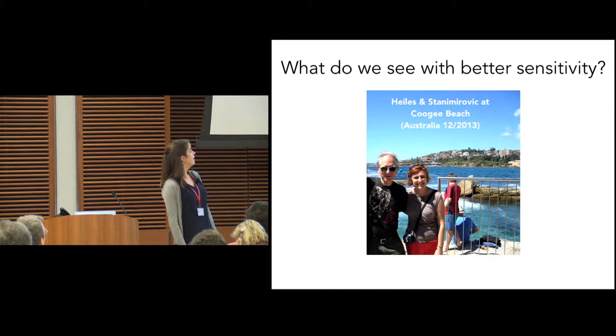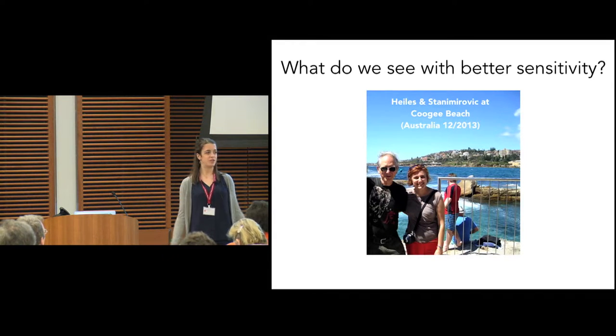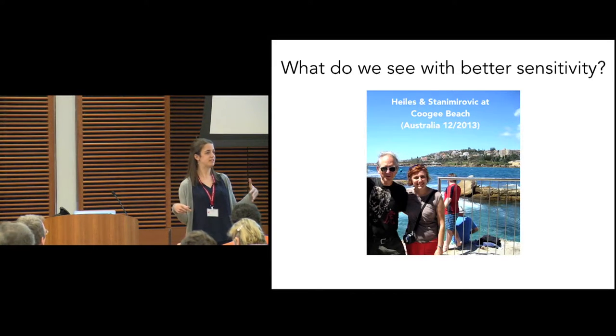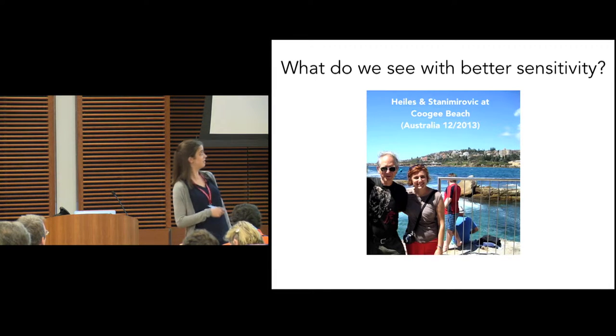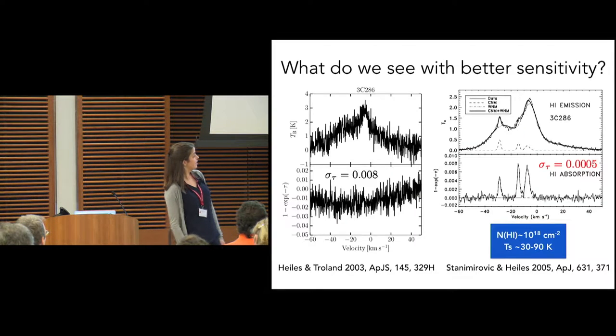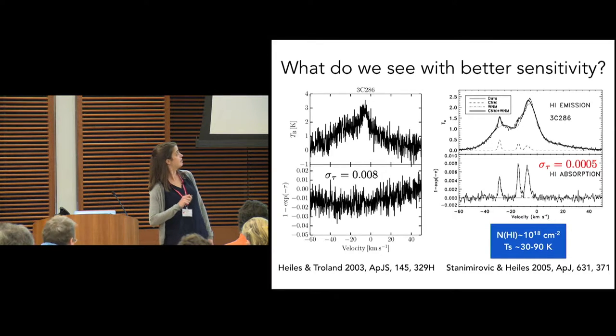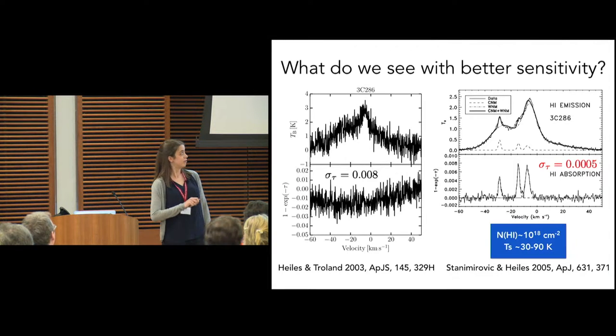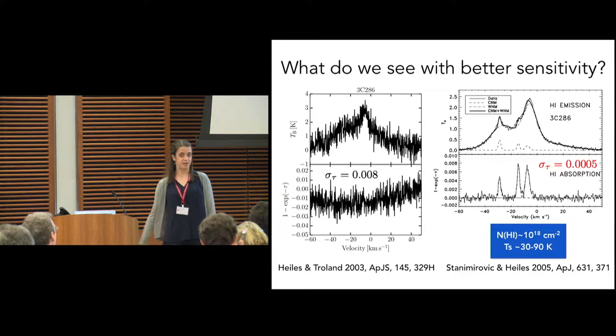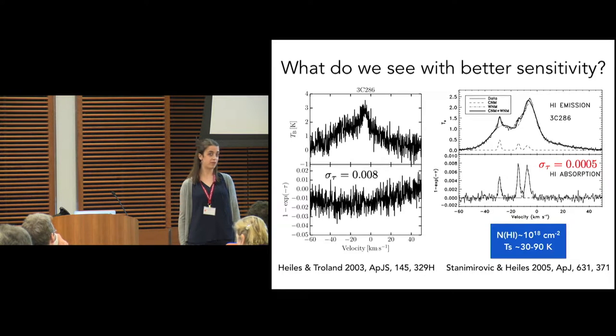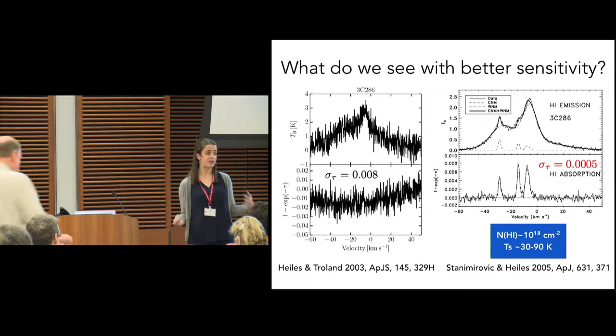The first question to start with is what do we see if we go to better sensitivity? The Millennium Survey was not as good as we can possibly do, so if we ramp up our sensitivity we should be able to see more of this material. Snez and Heiles addressed this in 2005. On the left I have the absorption and emission profile towards the famous calibrator 3C286, and then on the right is Snez and Heiles' spectrum with a factor of 10 better sensitivity in absorption. What you see are these very narrow cold clouds pop up out of the noise when we improve our sensitivity. This is not the warm gas that we expected to see from simulations, but rather just more cold stuff.